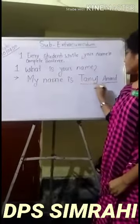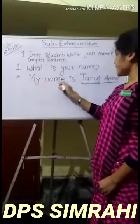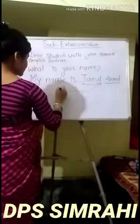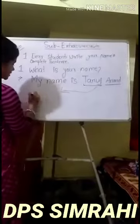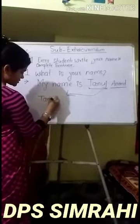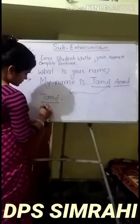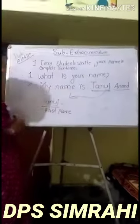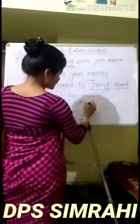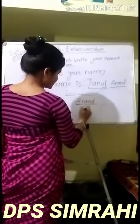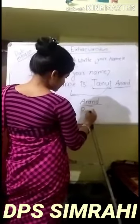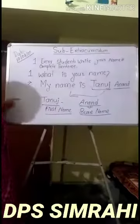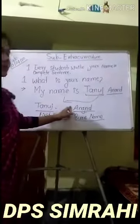Let's see. My name is Tanuj Anand. Tanuj is the first name, and Anand is the last name — it's called the surname. So: first name Tanuj, and surname Anand. Everyone, do it.